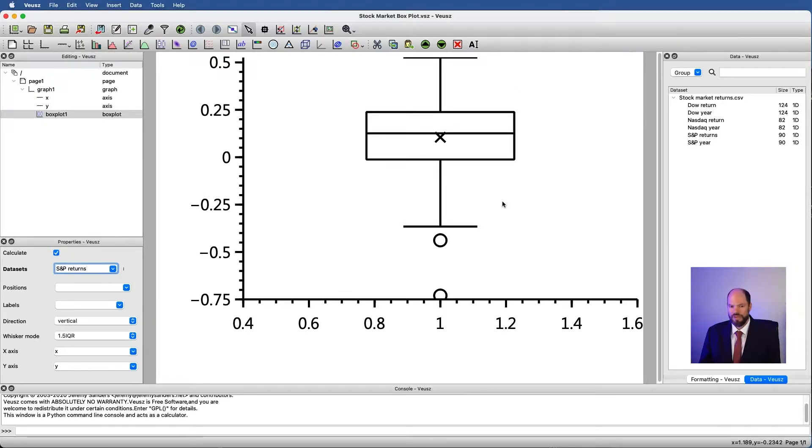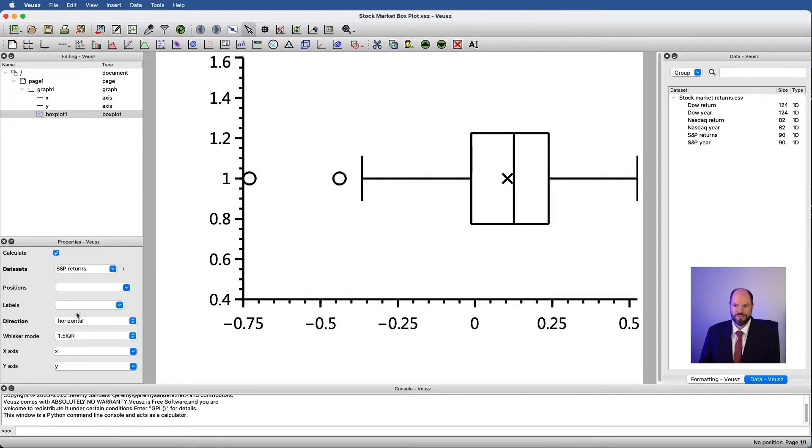Here, we say data set, because we want to look at the statistics of that data set. So let's just click on this and say, I want to look at the S&P 500 returns. And I will immediately get a box plot. Of course, it doesn't look beautiful yet, and that's okay.